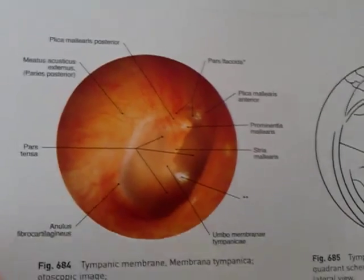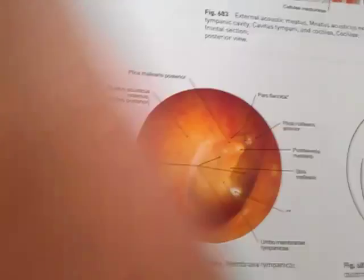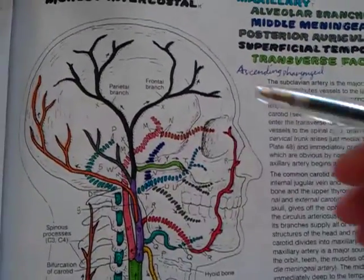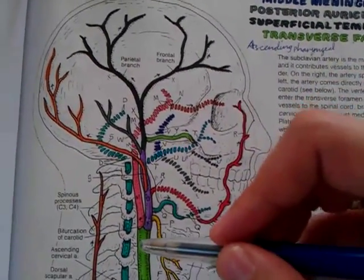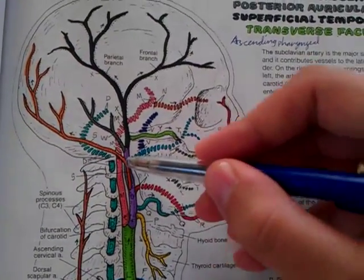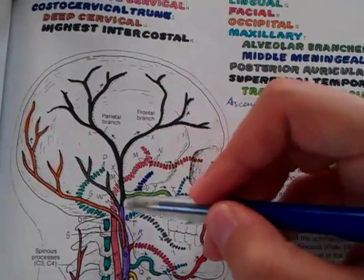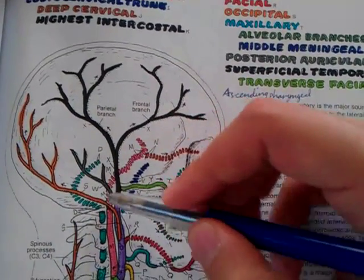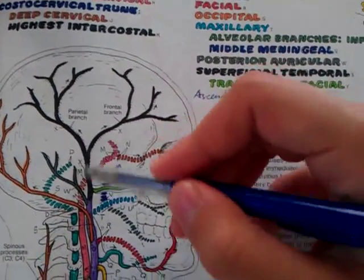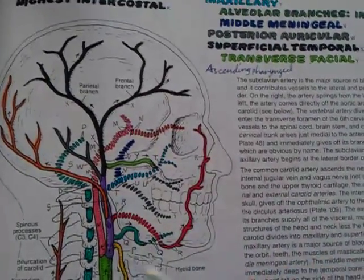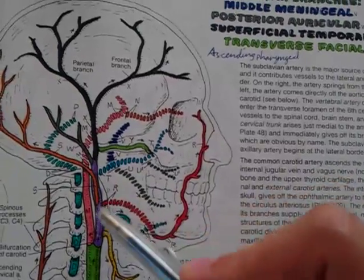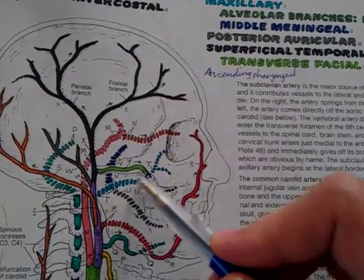The blood supply of the external ear is from branches of the external carotid artery — the posterior auricular and superficial temporal arteries. The meatus and tympanic membrane are supplied by branches of the maxillary artery.